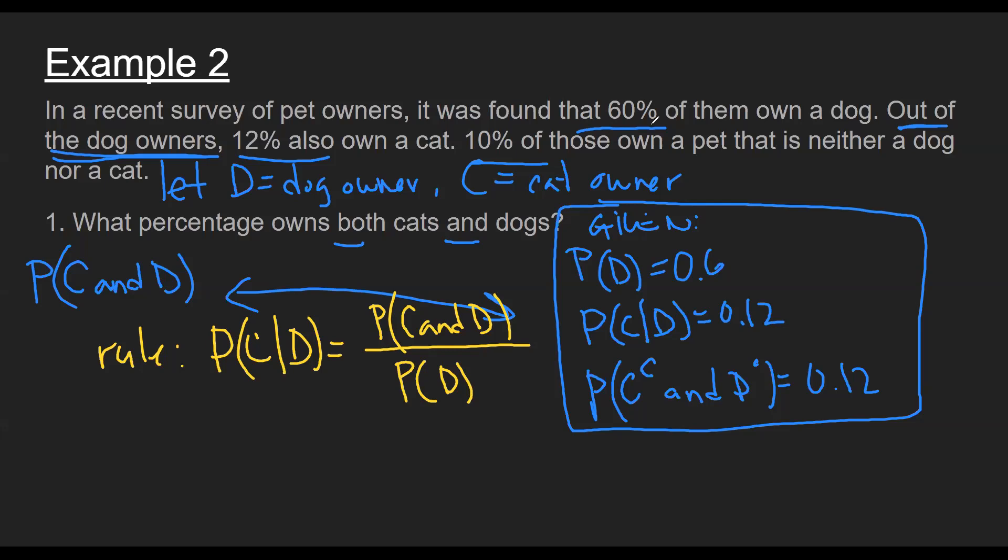So the conditional here is given as 0.12. The intersection cats and dogs is what we're looking for. And then the denominator D is given us 0.6. So therefore I can do some algebra and finally solve for the unknown C and D. And that result ends up being 0.072. And that does it for this first part.